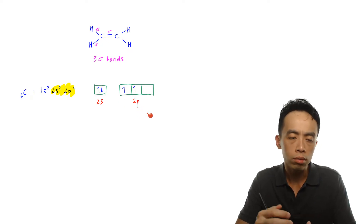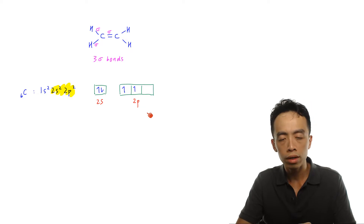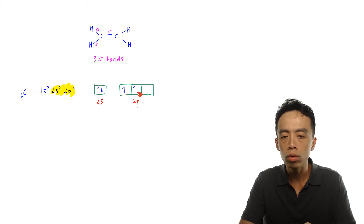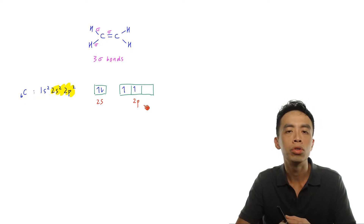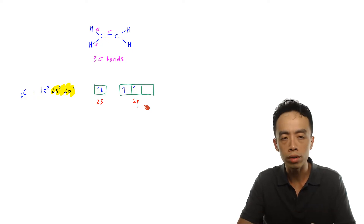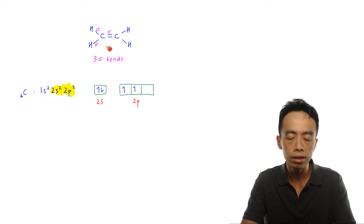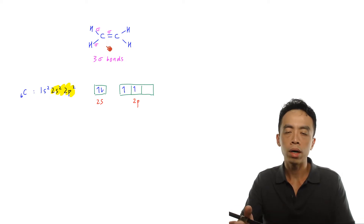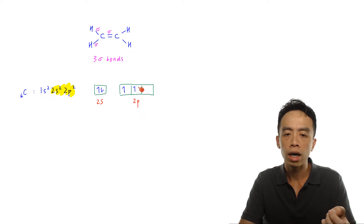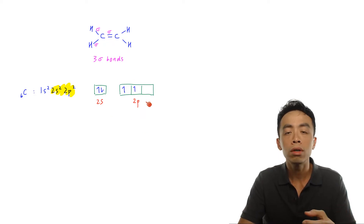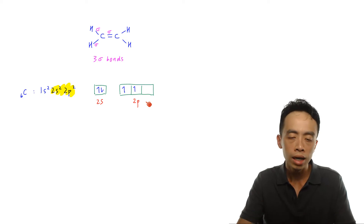Something interesting comes up when we consider carbon in the ground state: carbon only has two unpaired electrons, so it can only form two bonds. But that is not the case, because carbon in total can form four bonds, and in organic compounds carbon always forms four bonds. So based on the ground state, I can only form two bonds, which is insufficient.